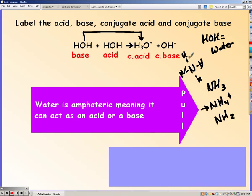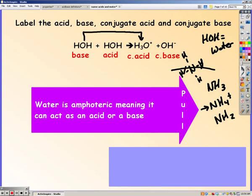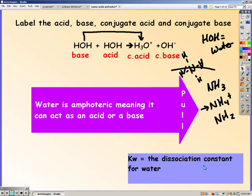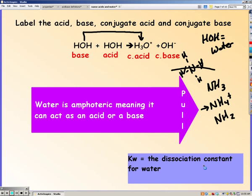NH4+ though, is not amphoteric because it could not gain a hydrogen. It doesn't have room for it. So if a substance could gain or lose a hydrogen, then it's amphoteric. We just talk about water being amphoteric because it's the most common one you see.